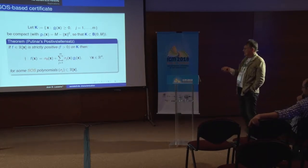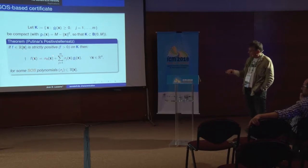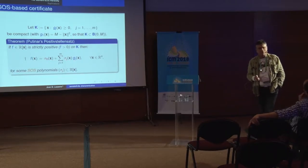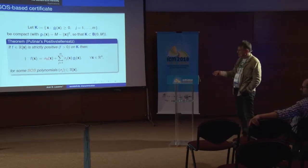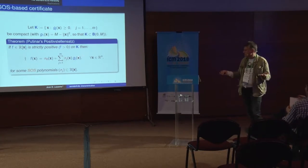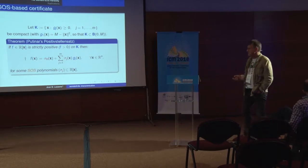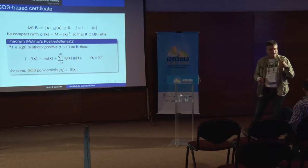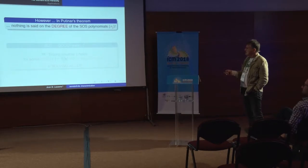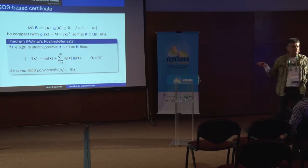When x is in K, the Putinar representation immediately shows F is positive on K: each term GJ times a positive weight contributes positively, plus the additional sum of squares. The strength of the theorem is that if F is strictly positive on K, you can indeed write F like this. The proof is far from trivial, but the statement is very easy to understand. One important note: the theorem says nothing about the degree of the SOS polynomials — to obtain the certificate, the weights sigma_J may need to be of very high degree, perhaps 1,000, even when F is quadratic.